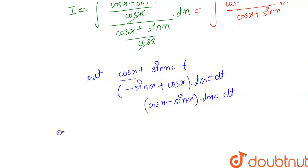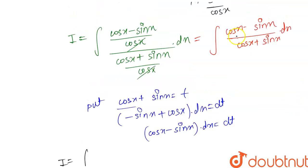Here our i becomes equal to integration of, now you can see that cos x minus sin x dot dx becomes dt.